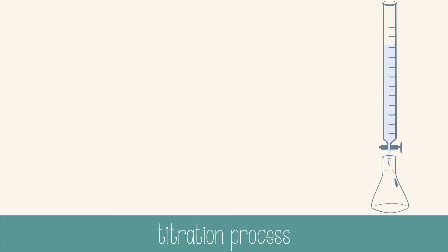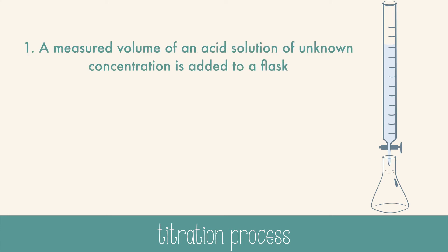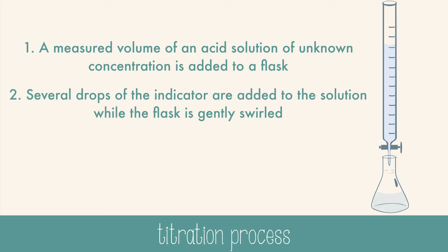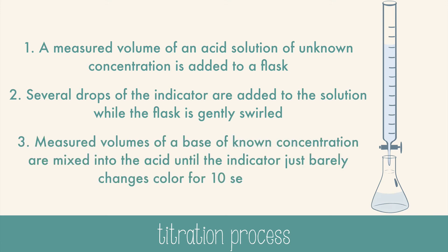So let's look at the steps of a titration. First, a measured volume of an acid solution of unknown concentration is added to a flask. Then, several drops of the indicator are added to the solution while the flask is gently swirled. And then, measured volumes of a base of known concentration are mixed into the acid until the indicator just barely changes color and stays that color for about 10 seconds.